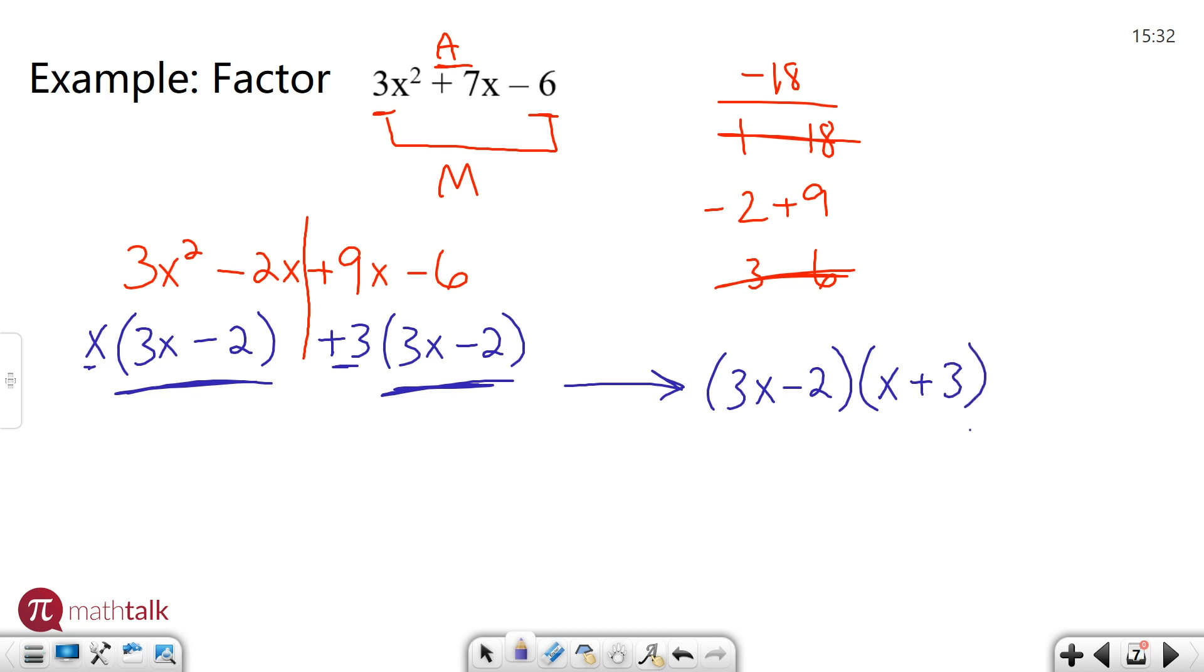And these are my two factors. So it's again two binomials that look like the previous video we did where it's like some x term and a number, some x term and a number. But you can see there's a lot more steps that are involved to getting there. So let's do another example to try it out again.